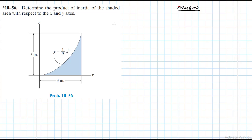We need maximum and minimum moments of inertia when designing beams, columns, and shafts. This is applicable mainly in the design of structural and mechanical members. Mathematically, the product of inertia of an area is defined as I_xy.